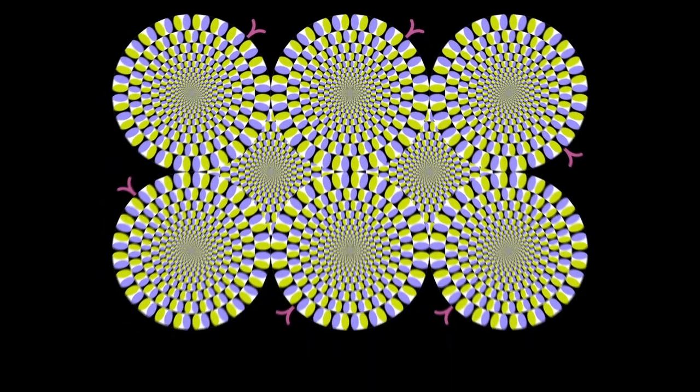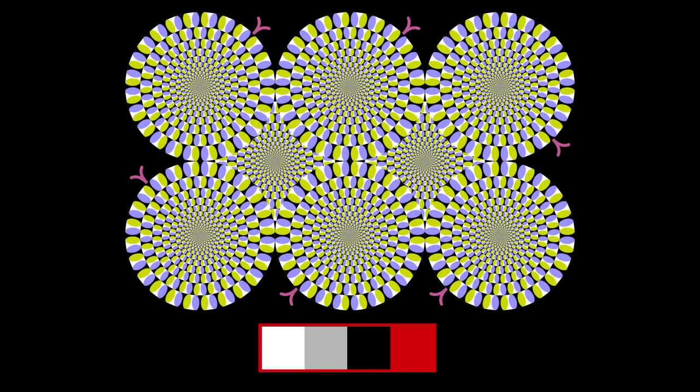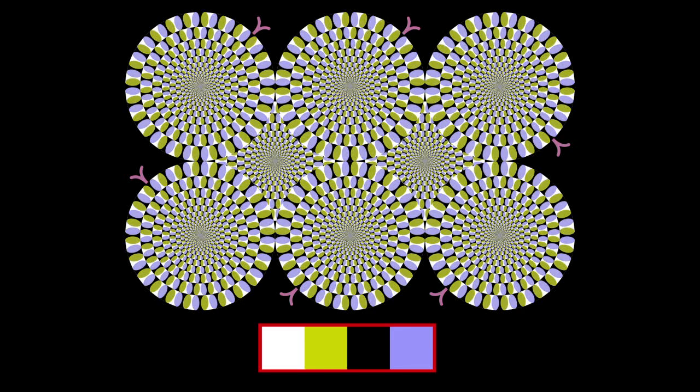The pattern of segments that leads to the illusory rotation is always white, light gray, black, and dark gray in sequence. In color, the lime green acts as light gray, and the light blue acts as dark gray, so you can see it also works in grayscale.